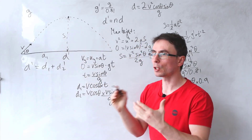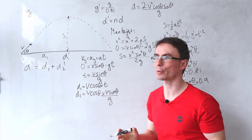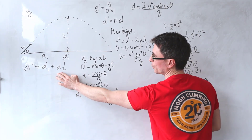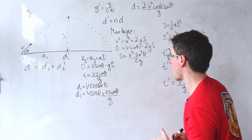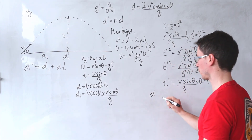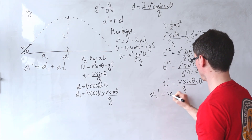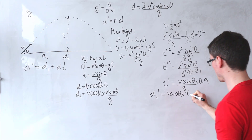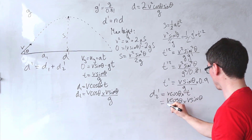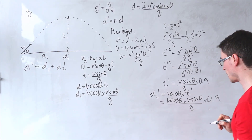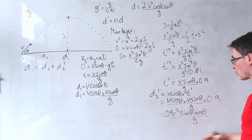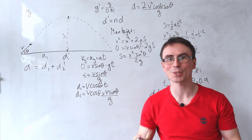Throughout the entire flight, the horizontal velocity has not changed — it remains v cos theta in the absence of air resistance. I can find d2', the range in the second half of the problem, by multiplying the horizontal velocity by the new time t prime. So d2' = v cos theta times t prime = v cos theta times v sine theta over g times 0.9. This range is 0.9 of the first half.